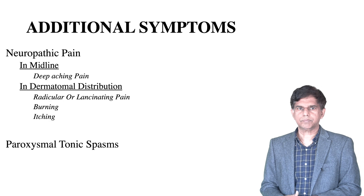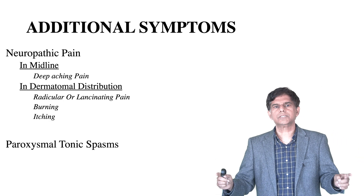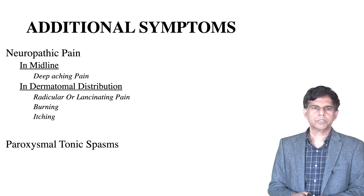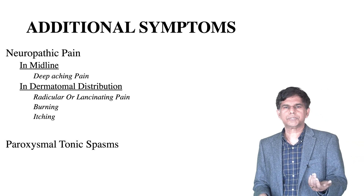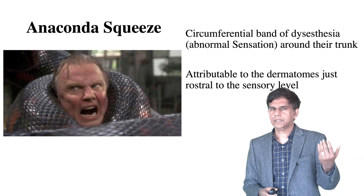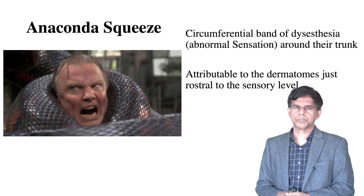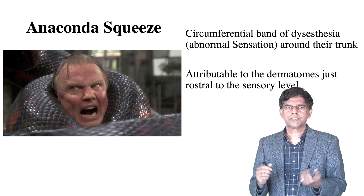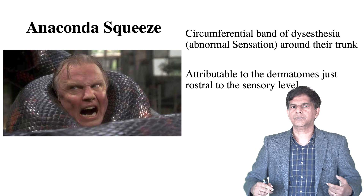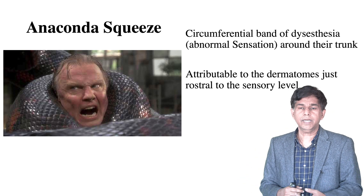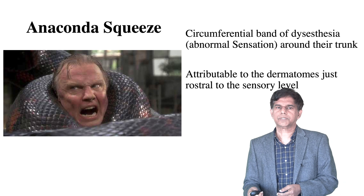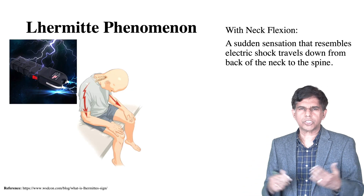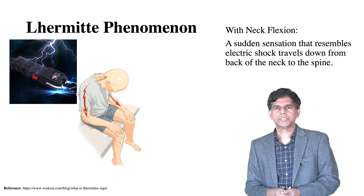Autonomic symptoms include urinary incontinence, bowel incontinence, sexual dysfunction, thermoregulatory dysfunction, gastrointestinal symptoms, and cardiovascular symptoms. Additional symptoms include neuropathic pain in dermatomal distribution and tonic spasms. An important finding is the 'Anaconda sign' — a circumferential band of dysesthesia around the trunk attributable to the dermatome just rostral to the sensory level.